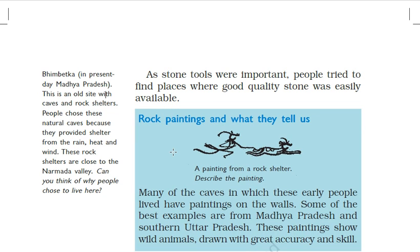As stone tools were important, people tried to find places where good quality stones were easily available. As life went on, stone tools became an important part of human life. People were finding food and resources to live, and at the same time they started finding places where they could get good quality stone, since stone had become a necessary part of their life.